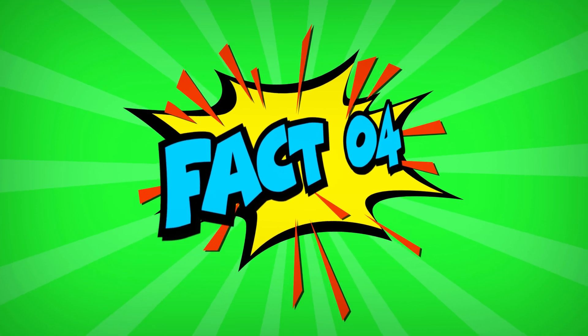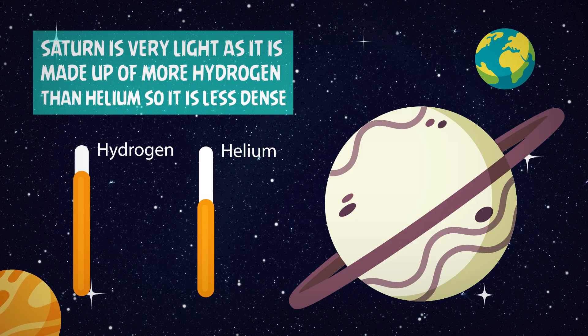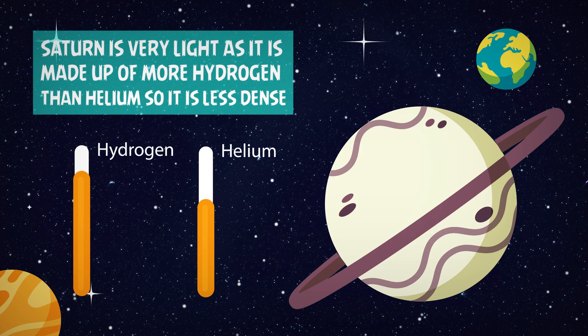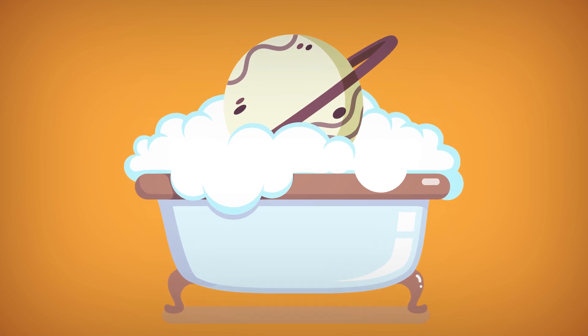Fact 4. Saturn is very light as it is made up of more hydrogen than helium, so it is less dense. If we could fit Saturn into a bathtub, it would float. But that will have to be one big bathtub.